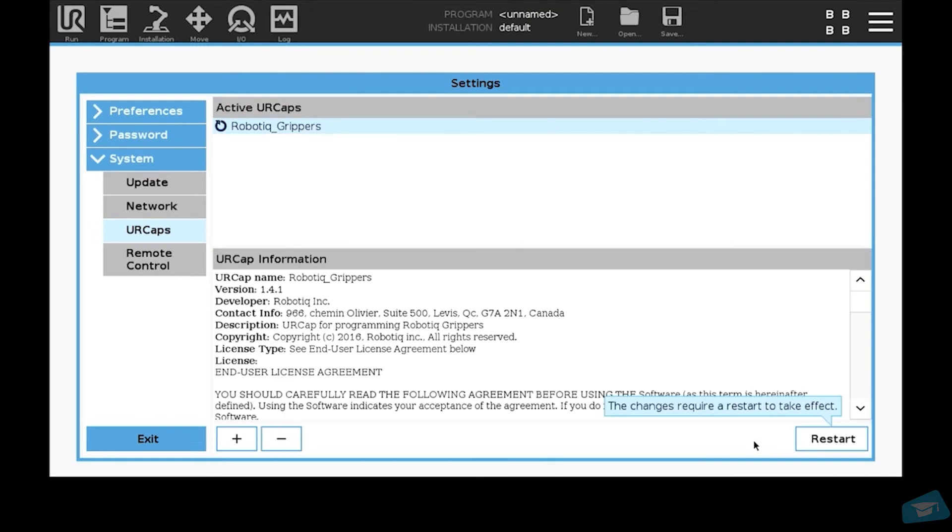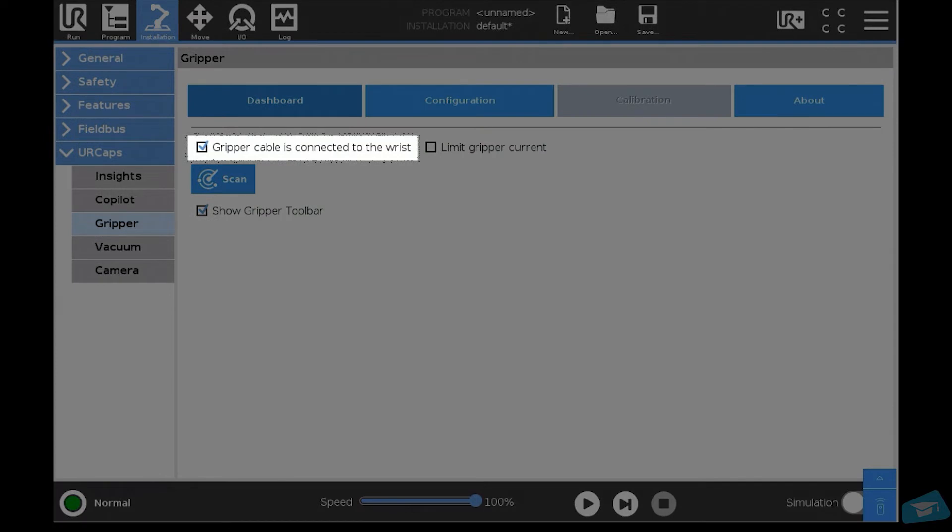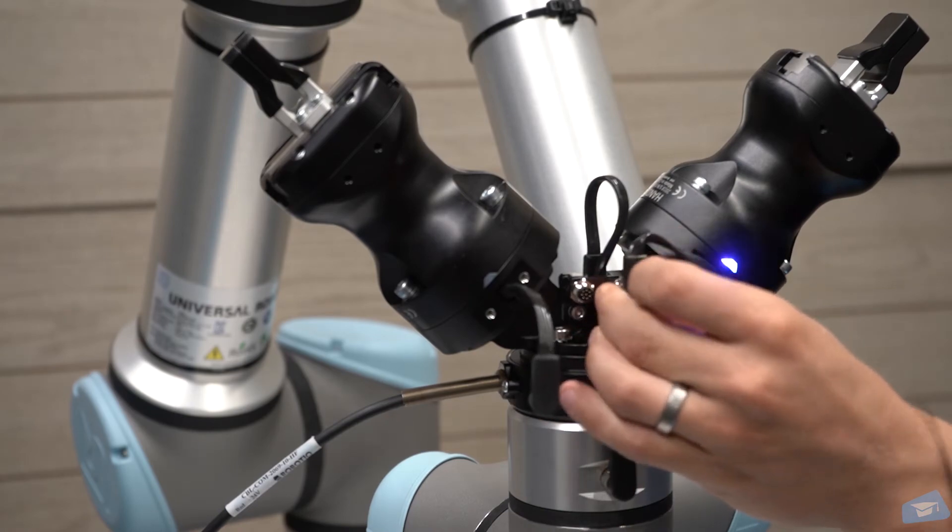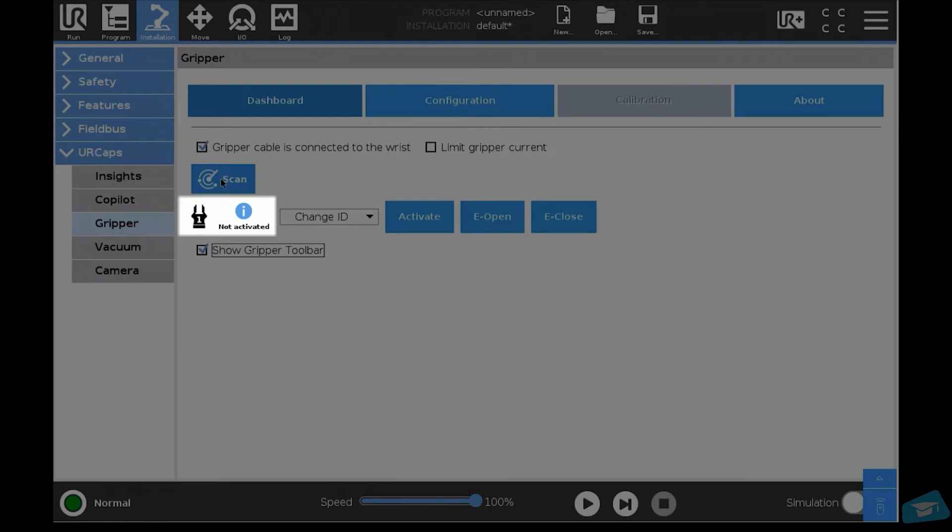For this step, you will need to have the gripper URA caps installed on your robot. First, open the gripper URA caps in the installation tab. Make sure the option gripper cable is connected to the wrist is selected. Then, connect your gripper of choice to the M8 splitter. Go into your gripper URA caps tab. Click on scan and wait for the gripper to be detected. Assign the ID number one to the first gripper you have connected.